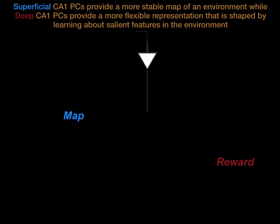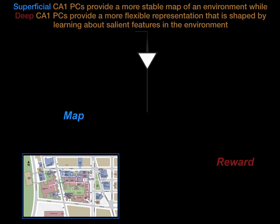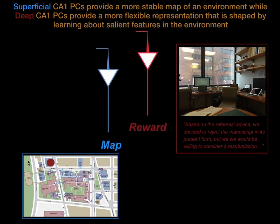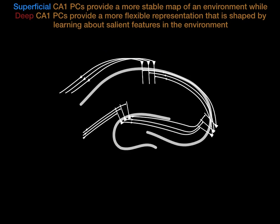In summary, our results indicate that superficial CA1 pyramidal cells provide a more stable map of an environment, while deep CA1 pyramidal cells provide a more flexible representation that is shaped by learning about salient features in the environment. Furthermore, by demonstrating cellular and population-level differences in activity between deep and superficial CA1 pyramidal cells, our work provides further insight into the cellular complexity and functional architecture supporting spatial processing and learning in the hippocampus.